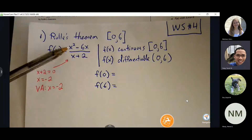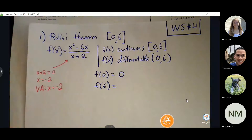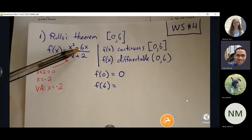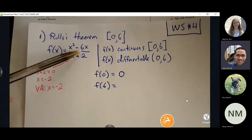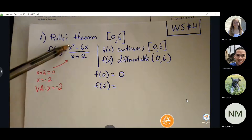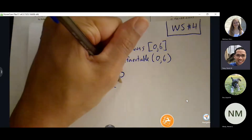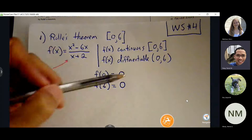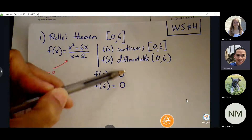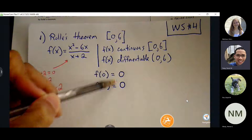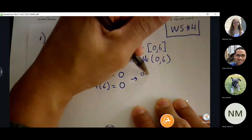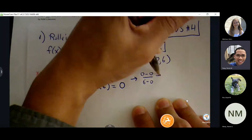Plugging 0 in for x: 0 minus 0 over 2 is 0 over 2, which is 0. Entering 6 into the function: 6 squared is 36, and 36 minus 6 times 6 is also 36. So 36 minus 36 is 0, and 0 over 8 is still 0. The important thing here is that we do need to share the same y value for Rolle's theorem. Because they share the same y value, the slope is going to be 0, and that's what we're after.